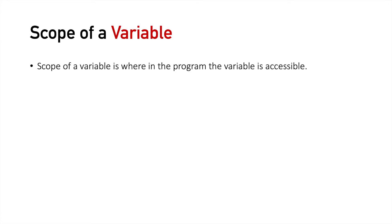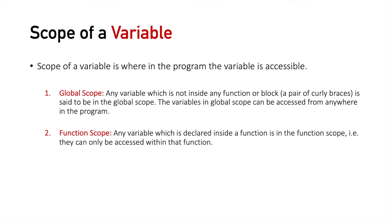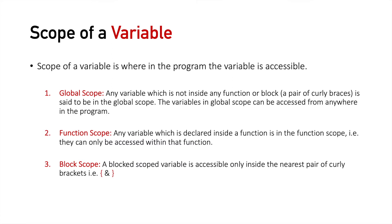Now let's talk about scope of a variable. In simpler terms, scope of a variable is where in the program the variable is accessible. We can divide it into three types. The first is global scope — any variable which is not inside any function or a block is said to be in global scope, meaning it can be accessed from anywhere within the program. Next is function scope — any variable declared inside a function can only be accessed within that function. The last one is block scope — a block scope variable is accessible only inside the nearest pair of curly brackets.